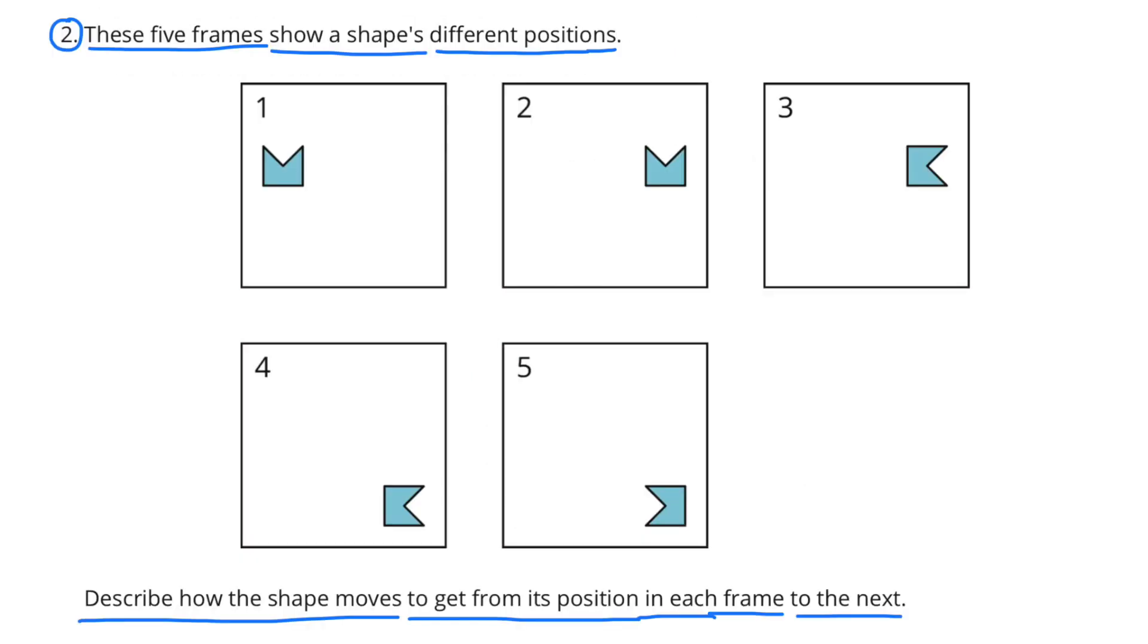Number 2. These five frames show a shape's different positions. Describe how the shape moves to get from its position in each frame to the next.